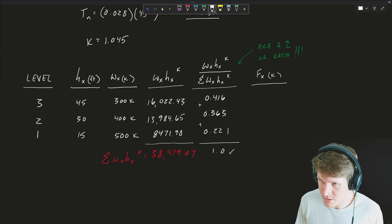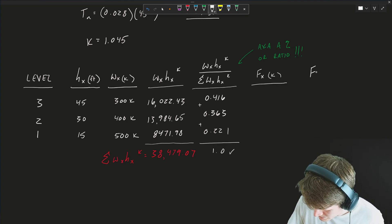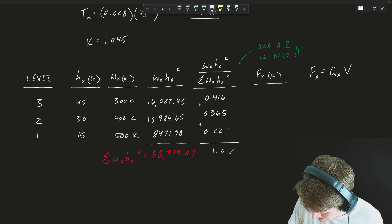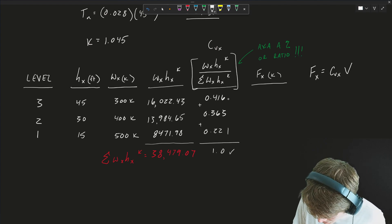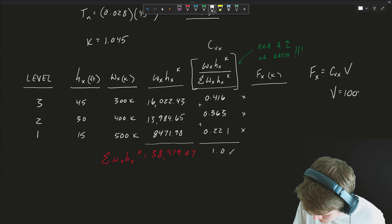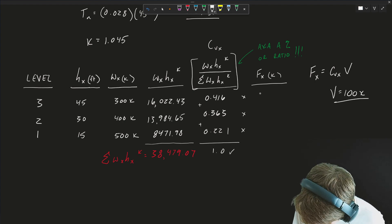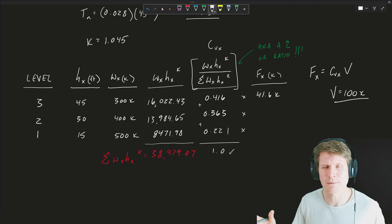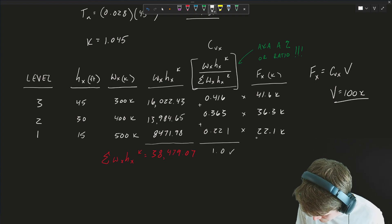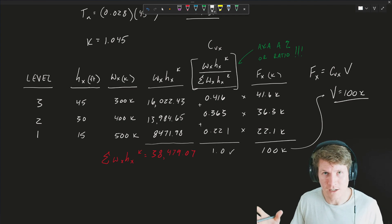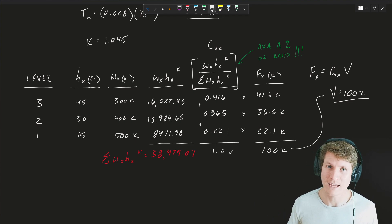To get your story force, remember that F_x = C_vx times V. C_vx is those ratio numbers we just calculated. To get F_x, it's just those numbers times our V of 100 kips. That gives 41.6 kips at the roof, 36.3 kips at the second floor, and 22.1 kips at the first floor. And as it should, all of these sum to 100 kips, which is the base shear — another checkpoint to make sure everything was done correctly.